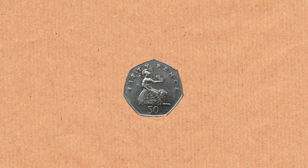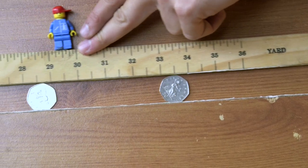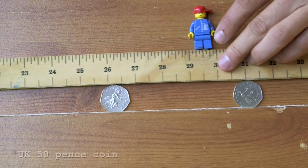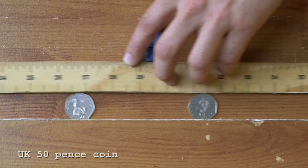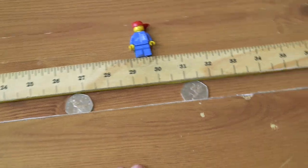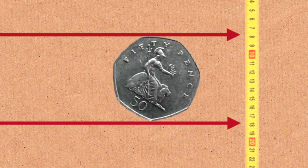So 50p coins are shapes of constant width. If you get hold of two 50p coins and a couple of books and roll the books around, they will stay the same distance apart, because even though they're not circles, 50p coins are shapes of constant width. They make them like that because coins have to be shapes of constant width to work in vending machines. Vending machines measure the width of a coin as it goes through, so if that were to change, the vending machine wouldn't know what coin you're putting in.